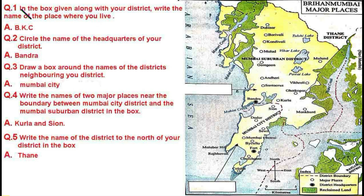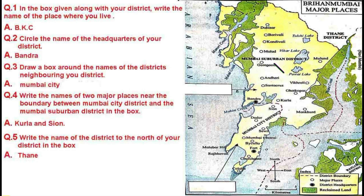Let us see the questions one by one. In the box given along with your district, write the name of the place where you live — for example, BKC, that is Bandra-Kurla Complex. For question two, circle the name of the headquarters of your district — if you stay in BKC, you circle Bandra. For question three, draw a box around the names of the district neighboring your district. Our district is Mumbai Suburban District, so our neighbor is Mumbai City District — we draw a box around Mumbai City District.